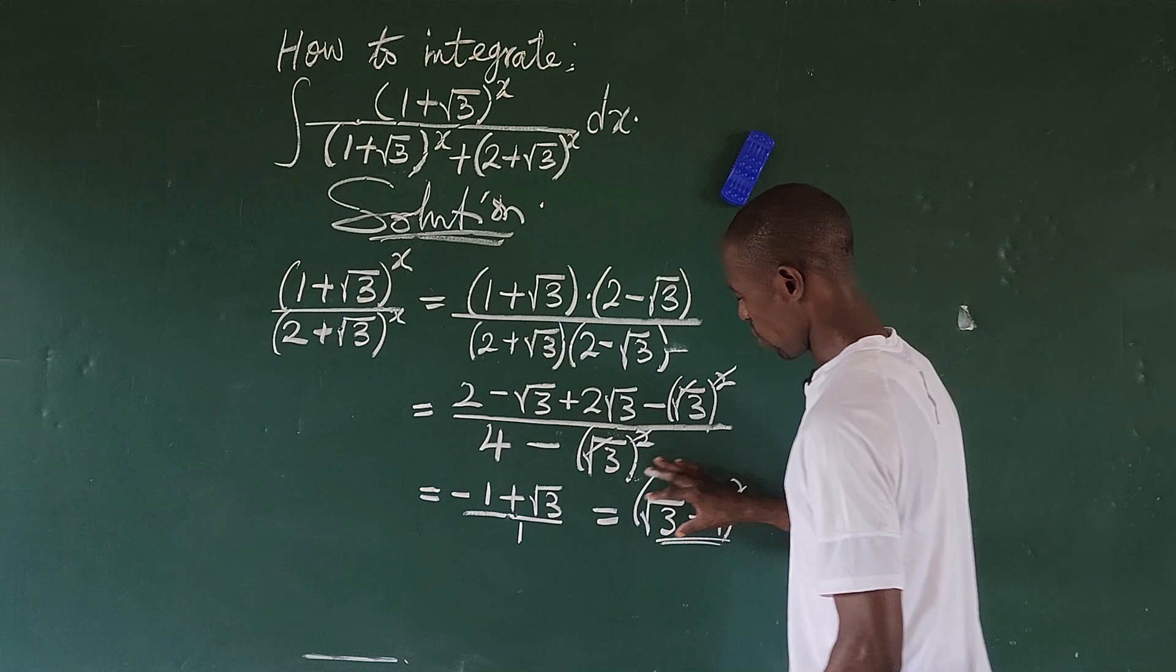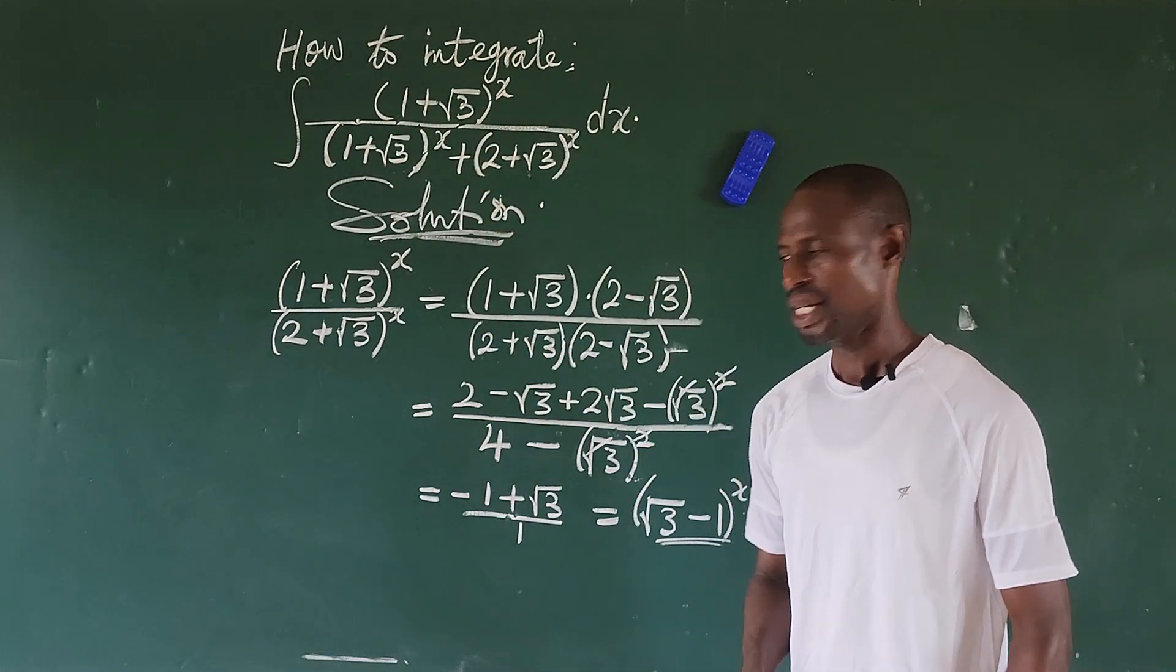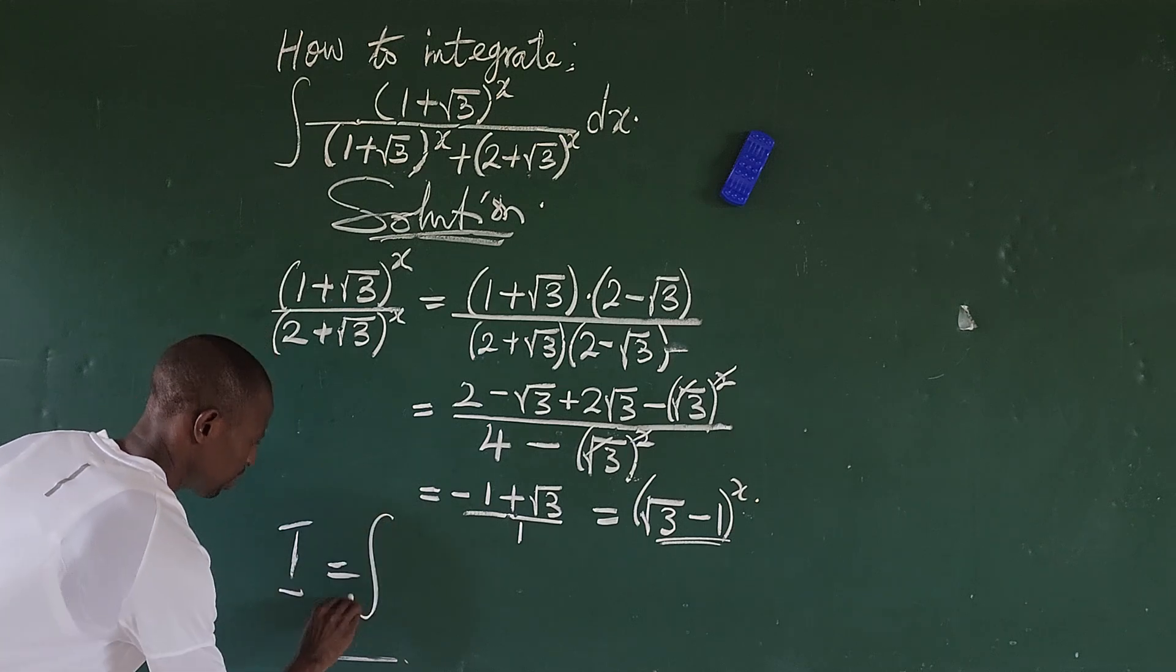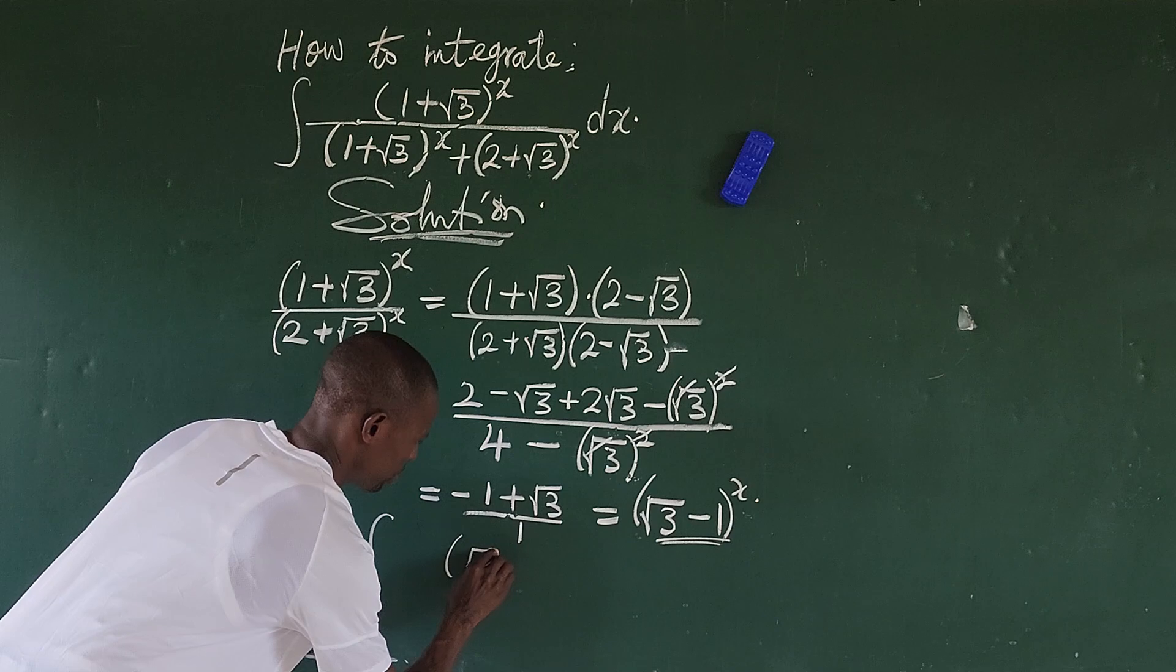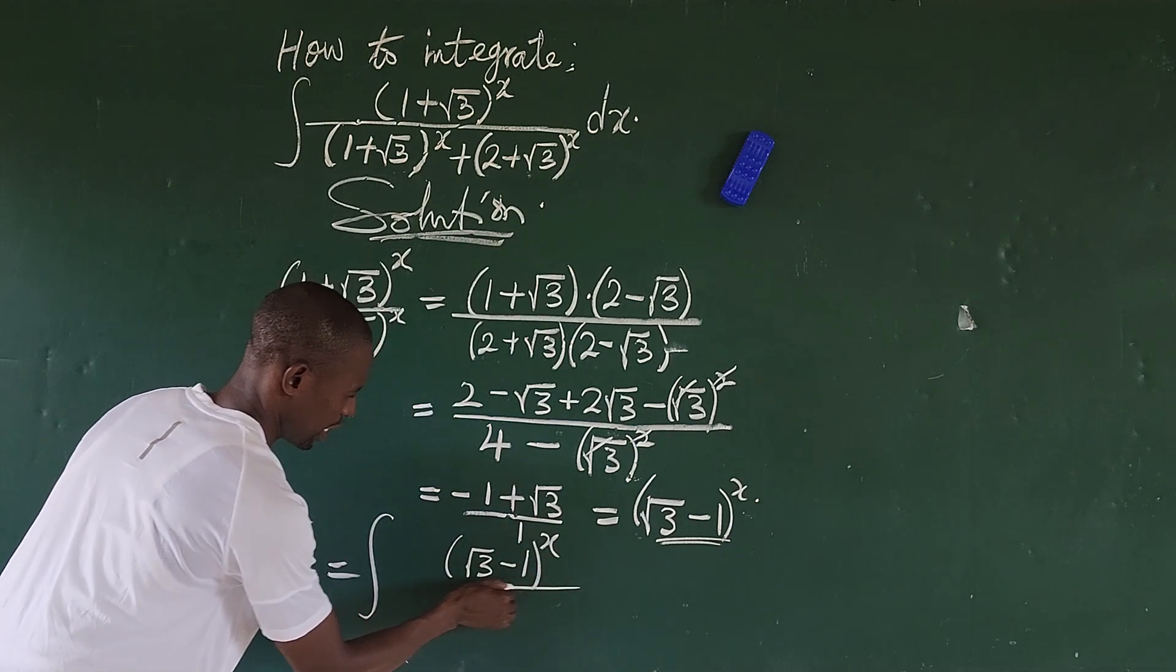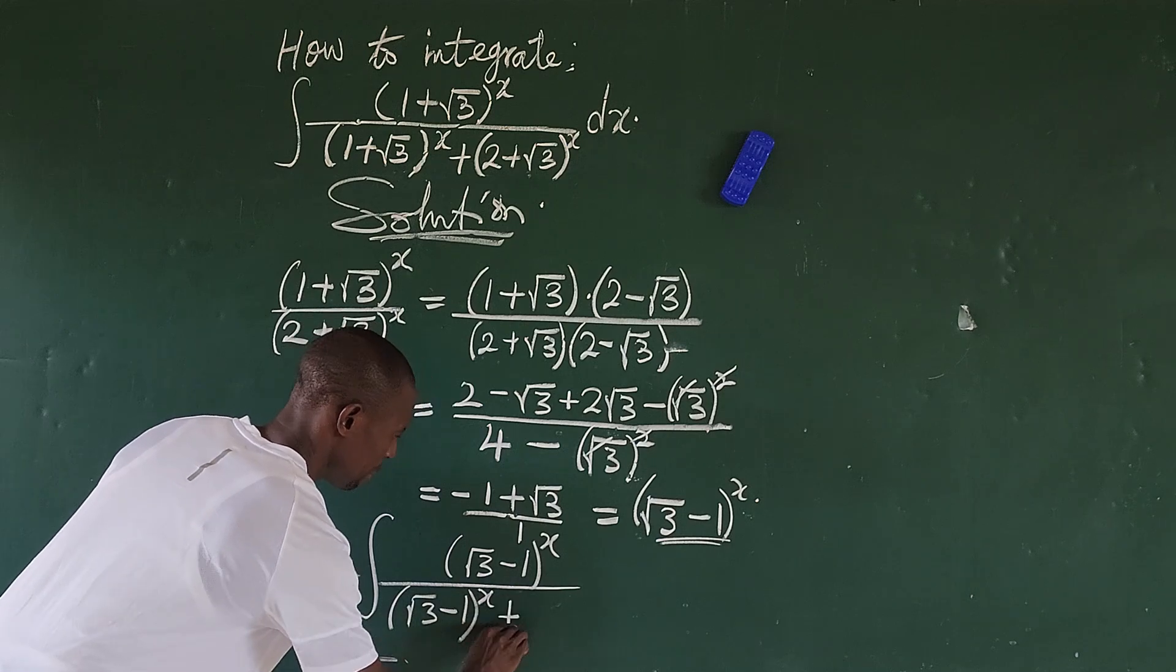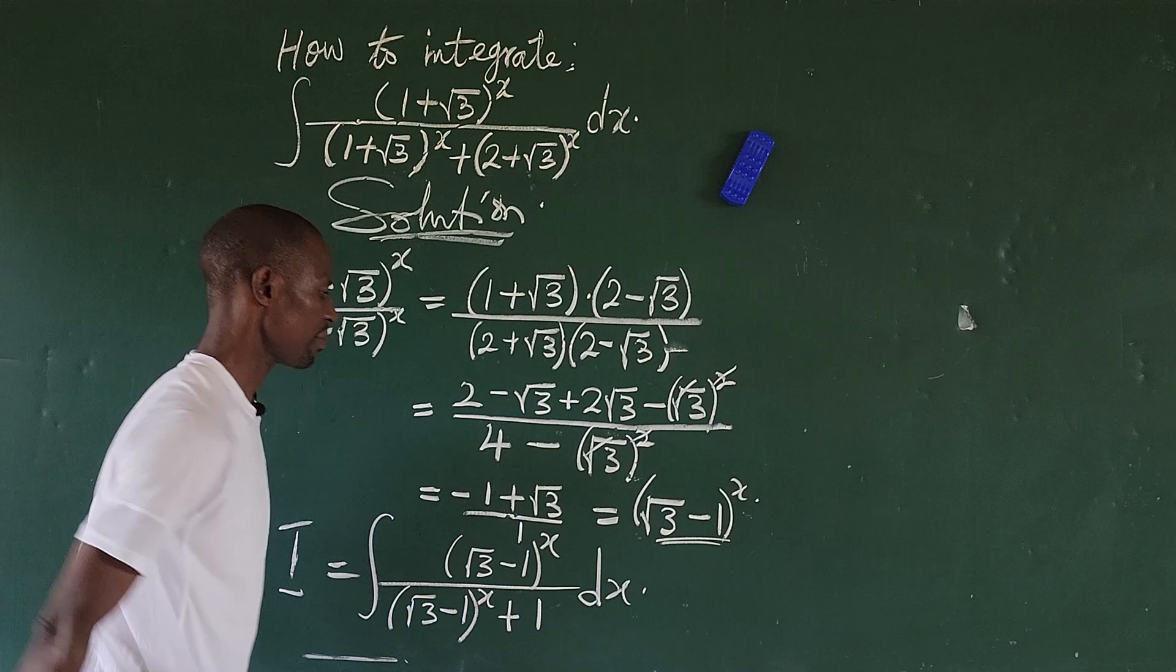So let's go ahead and substitute what we have here in this place and this place. Of course here will now be 1. So this will now give us: I equals to the integral of (√3 - 1)^x all over (√3 - 1)^x plus here we say it's going to give us 1 dx.